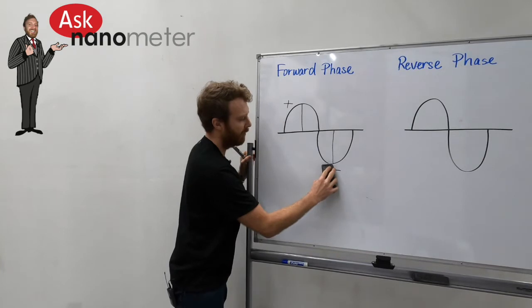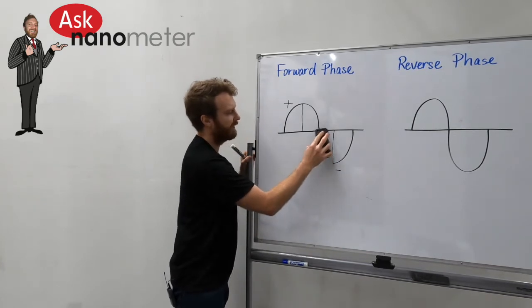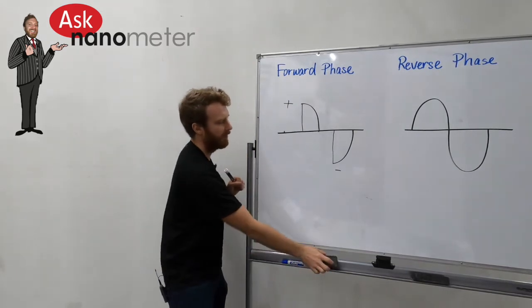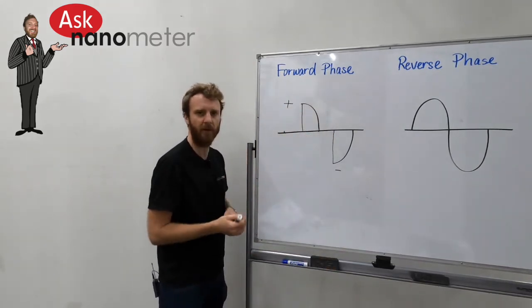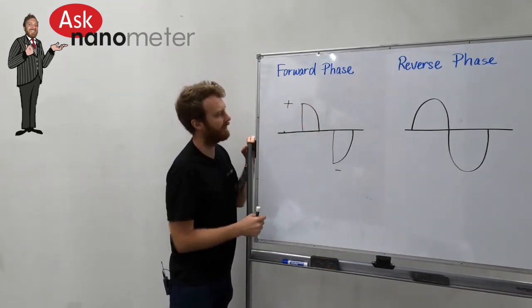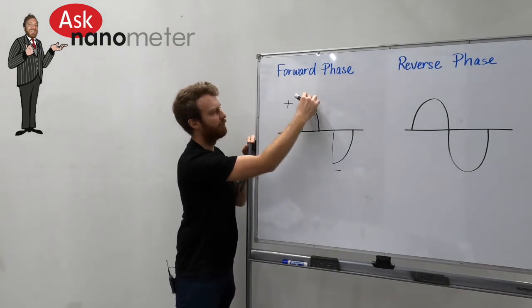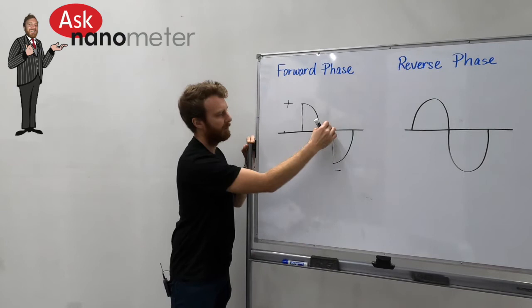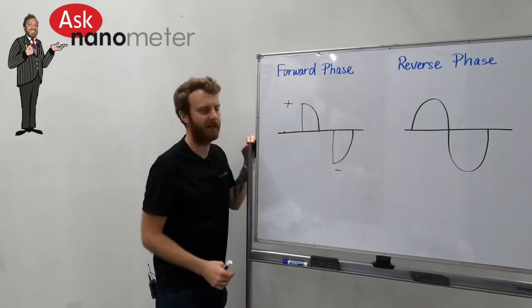Instead of having the steady climb to the top of the mountain and then trailing down on the trailing edge, we're going to have an inrush of peak maximum potential and then a steady climb back down and then the same thing on the negative side.